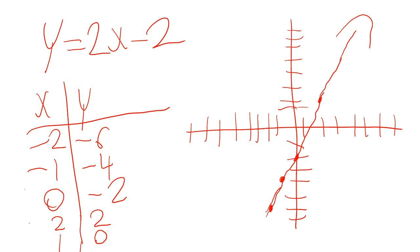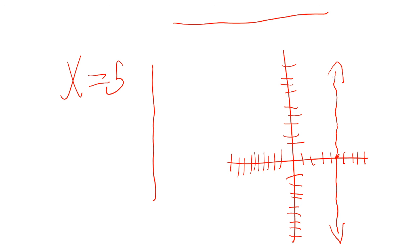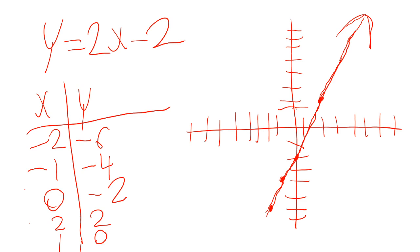If I had a ruler or straight edge it would be easier, but that's the graph of y equals 2x minus 2. We would draw a straight line that continues in both directions. Hopefully this video is helpful — that's how you graph a linear equation. We covered two linear equations in this video. Bye.